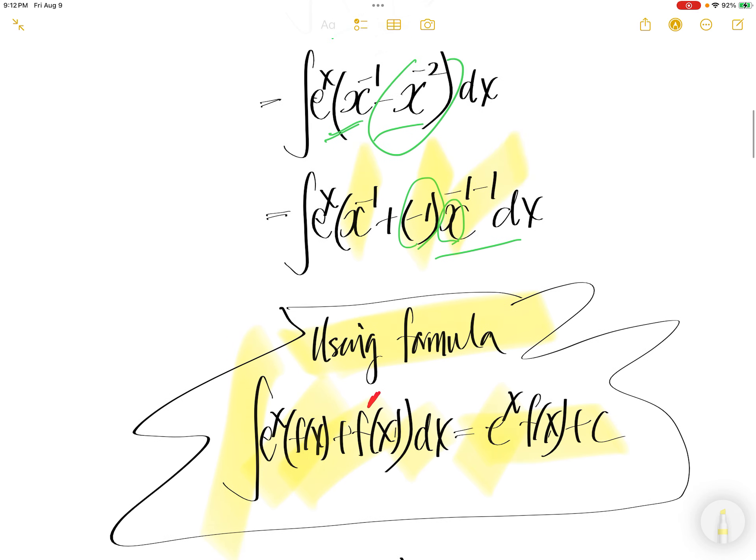x to power negative 1 minus 1, which is x to power negative 2. And then this times positive 1 is negative x to power negative 2, which is this piece.